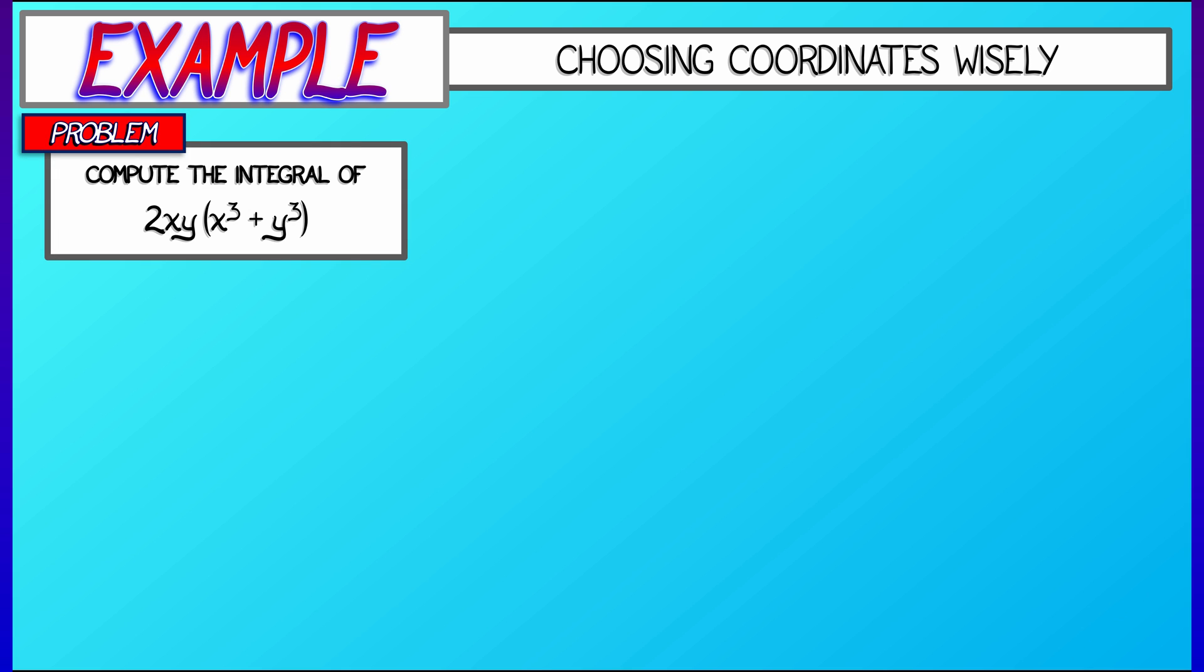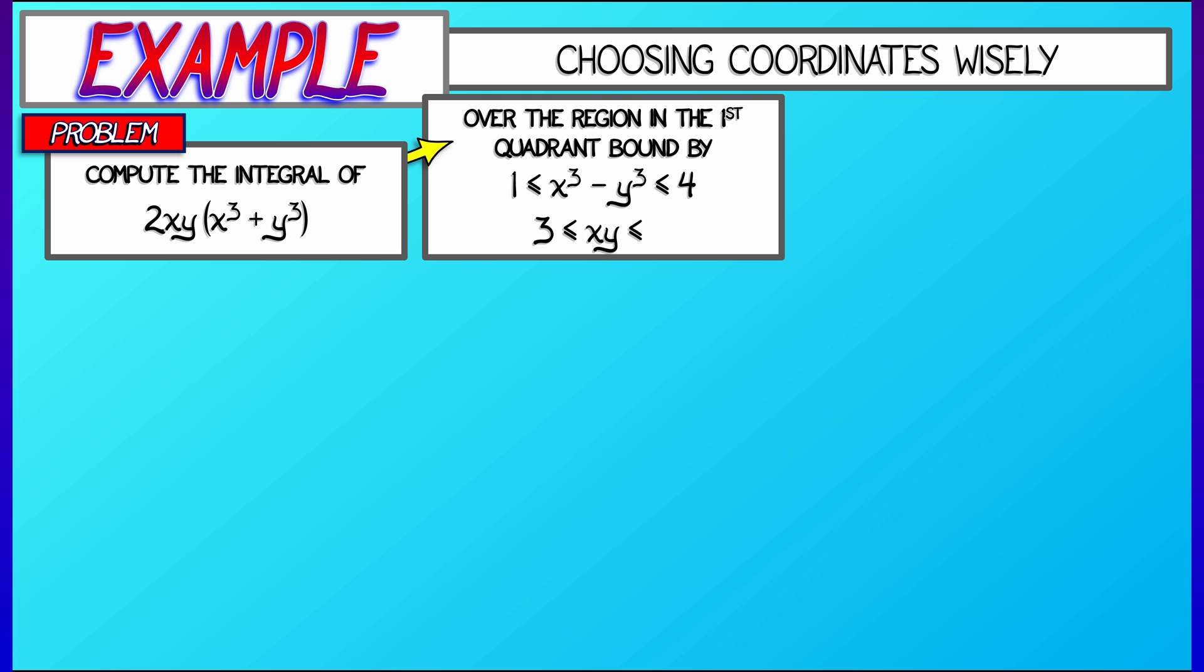Compute the integral of 2xy times quantity x cubed plus y cubed. Oh, well, that's not so bad. Oh, but wait, we have to integrate that over the region in the first quadrant, bounded by the inequalities x cubed minus y cubed ranges from 1 to 4, and xy ranges from 3 to 5.